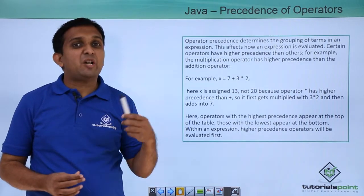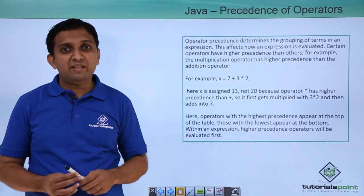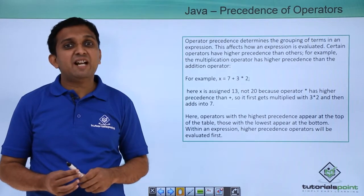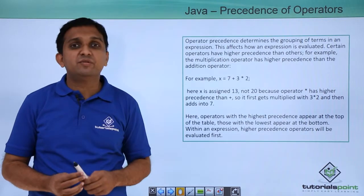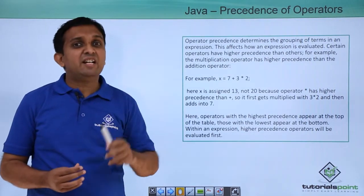Precedence means the priority of one operator over another operator, and associativity is regarding reading the operators or reading the operands from either left to right or right to left.